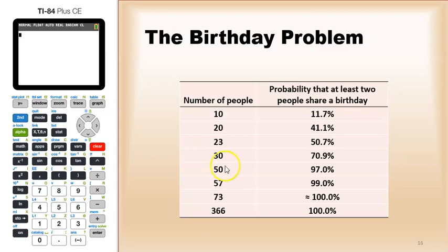By the time you get to 57, it's effectively a 99% chance. At 73, the probability is right around 100%. You're almost certain to have two people with the same birthday. And of course, at 366, you're guaranteed to have at least two people with the same birthday.